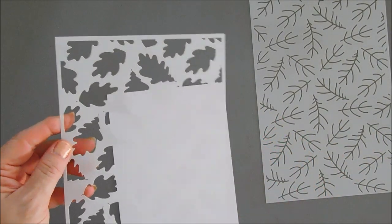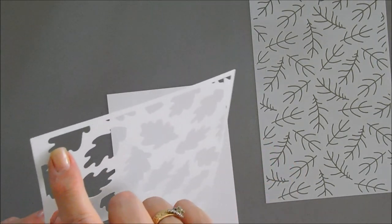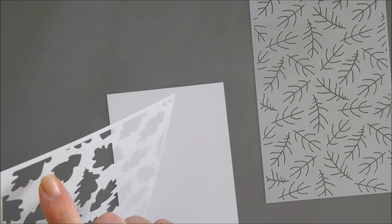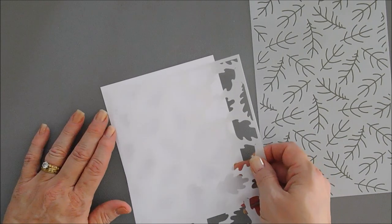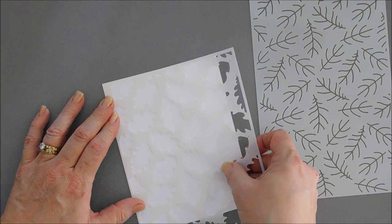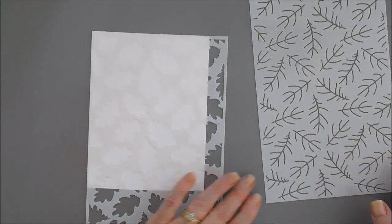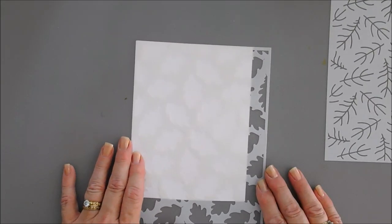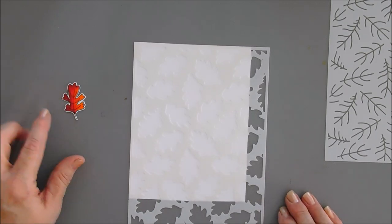Now my stencil, the stencils that we're using are indexed on top. This one says Autumn Leaves Stencil A. And so we'll place this in the top corner of our cardstock. And then we need some inks to color in our images. I'm going to use the same colors that I used here. So some reds and oranges and maybe some browns.